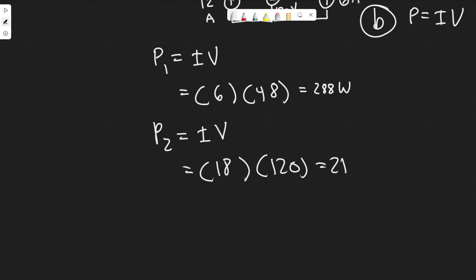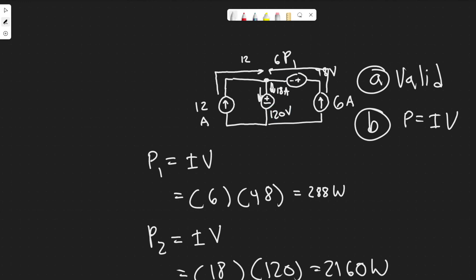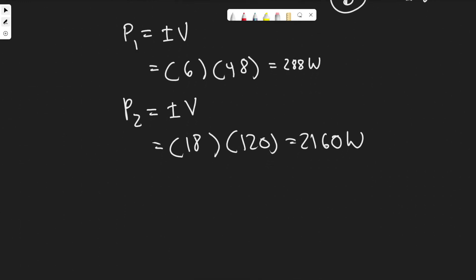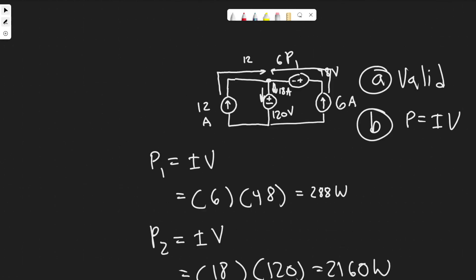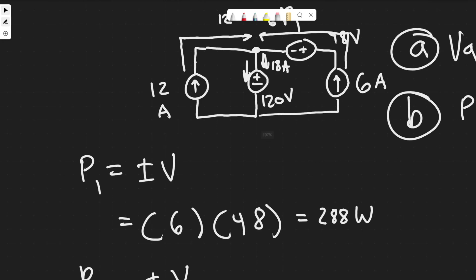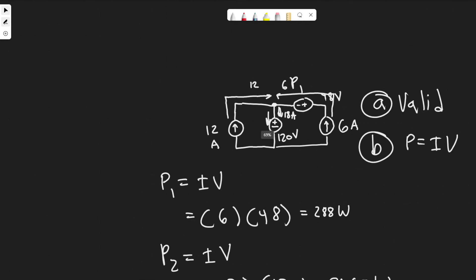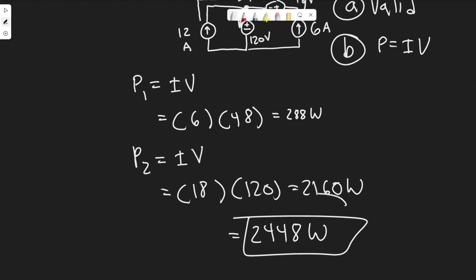18 times 120 gives us 2160 watts. Now we know the power dissipated by each voltage source. We can just add them up: 2160 plus 288 equals 2448 watts. The power dissipated equals the power developed, so the current sources are developing 2448 watts. That's your answer for part B.